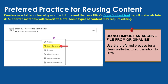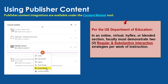We do not recommend importing an original course archive file into an Ultra course due to the many differences between the two course experiences and the volume of conversion warnings that may appear. The tools for adding third-party publisher content are available through the Ultra courses content market. When using publisher content in an online, virtual, hybrid, or high flex section, take care to demonstrate the U.S. Department of Education's requirements for regular and substantive interaction. Publisher content with auto-graded assessments should never replace your presence or duties as an instructor.